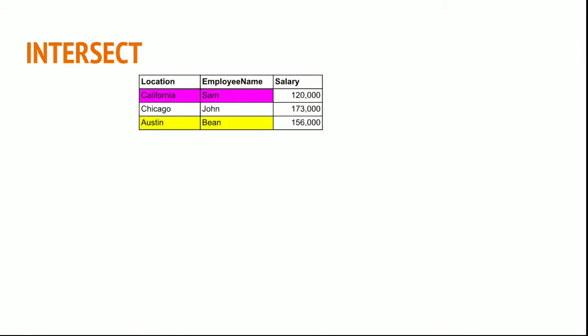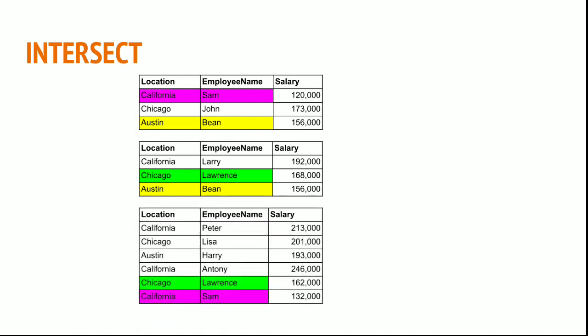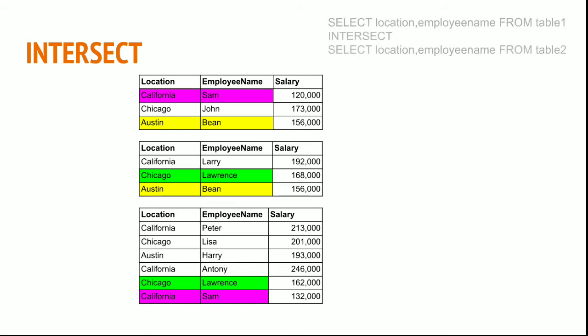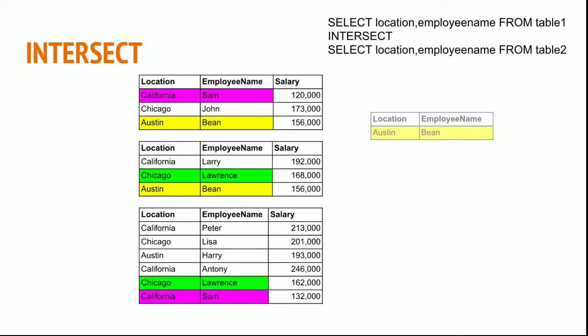Intersect. If I have matching data in table 1 and table 2, the matching records will be returned by INTERSECT. When I use the keyword INTERSECT between two select statements from table 1 and table 2, I get the common record Austin Bean — highlighted in yellow — and only that record is returned. Similarly, for table 1 and table 3, I get California Sam highlighted in pink, and for table 2 and table 3, I get Chicago Lawrence highlighted in green.